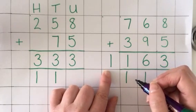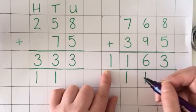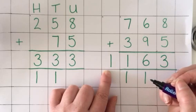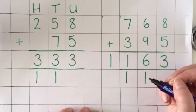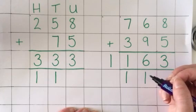So the answer is 1,163. If you've found this okay, then you should be able to do column addition of any size numbers.